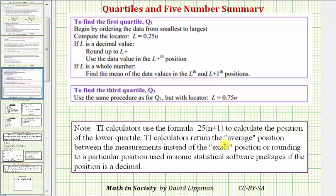The TI-84 calculators return the average position between the measurements instead of the exact position or rounding to a particular position used in some stat software packages, if the position is a decimal.